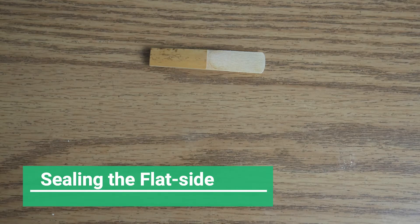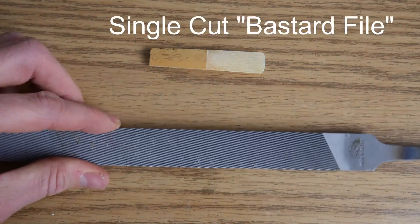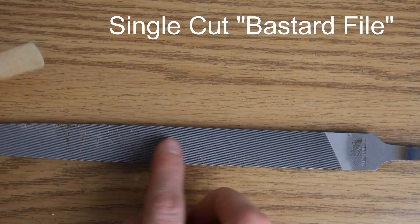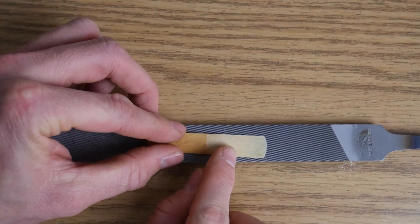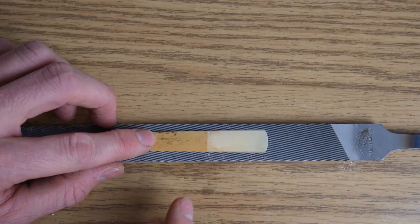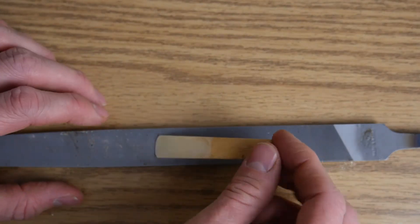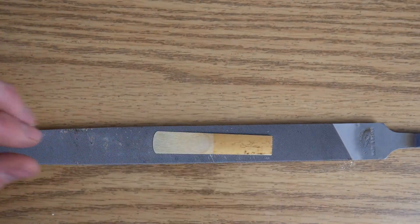To seal the flat side of the reed, the best tool is a single cut flat file. Make sure that the file is wide enough to accommodate your reed. So if you're sealing a baritone saxophone reed or a bass clarinet reed, you will probably need a pretty large file. This one works perfectly for alto saxophone or soprano clarinet reeds.